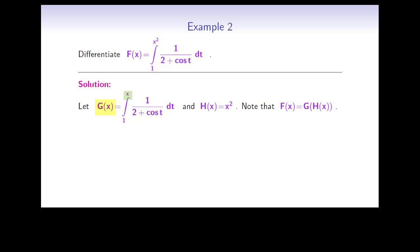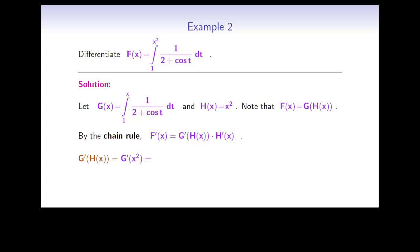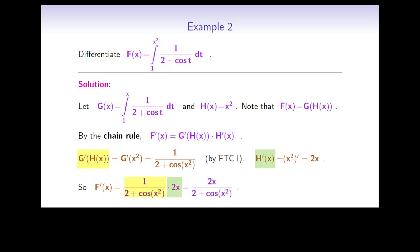When you take g and replace x by x², you get the integral from 1 to x². The chain rule says the derivative of the composition equals g prime of h of x times h prime of x. g prime of h of x is g prime of x², and by the fundamental theorem, the derivative of g is 1 over (2 + cos x), so evaluated at x² we get 1 over (2 + cos(x²)). Since (x²)' = 2x, multiplying gives f prime of x equal to 2x divided by (2 + cos(x²)).